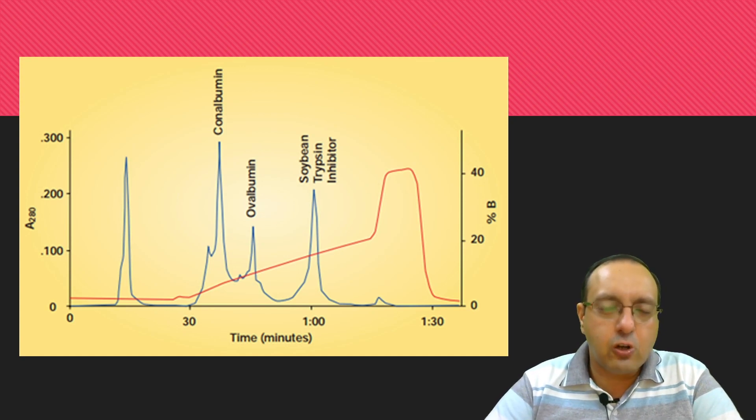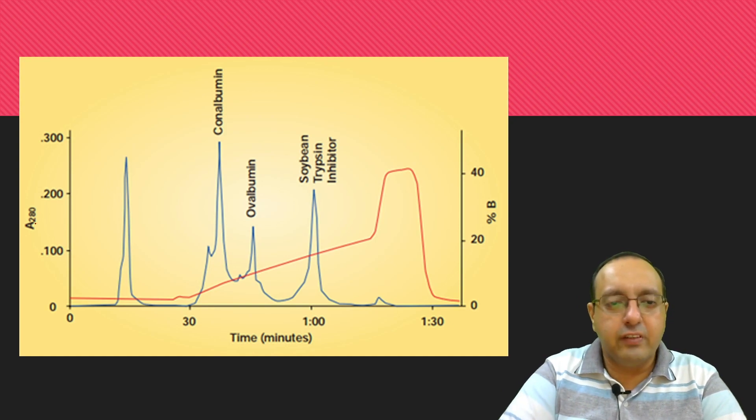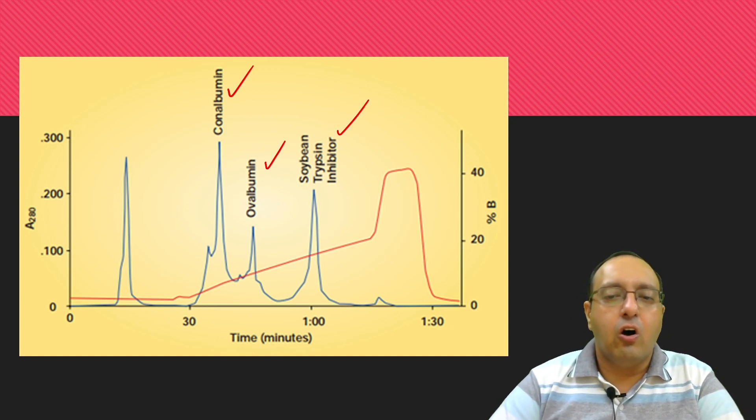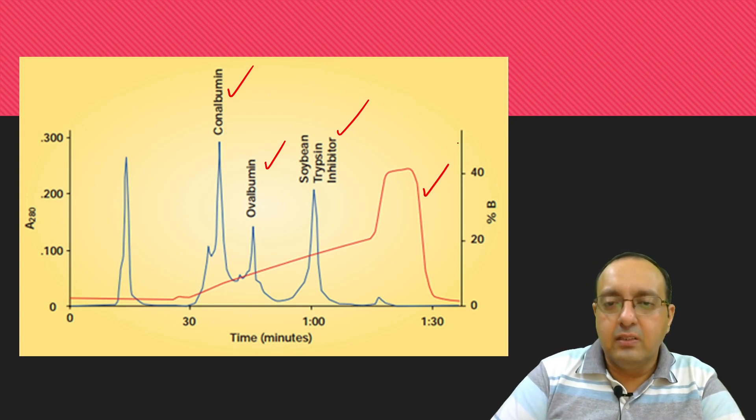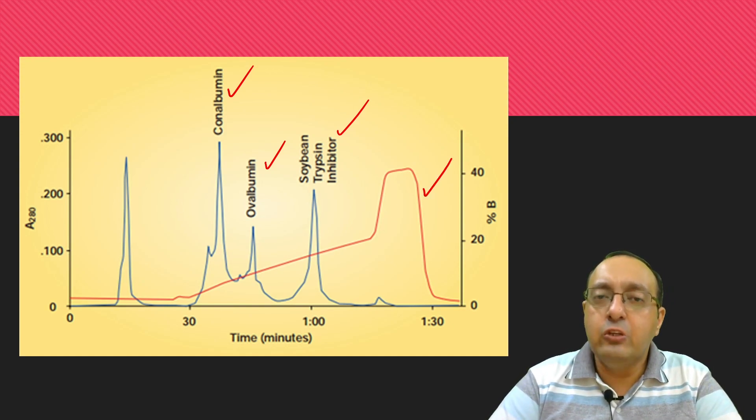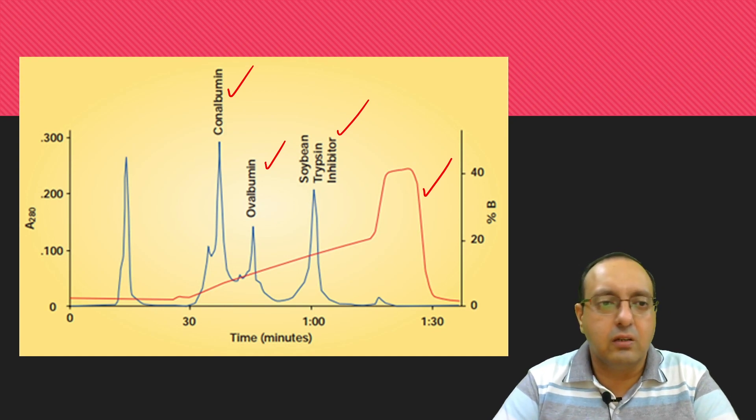That finishes our discussion of ion exchange chromatography. We have a nice figure here showing the separation of three different proteins on an ion exchange column using the linear gradient elution technique, just to give you a recap of the technique.